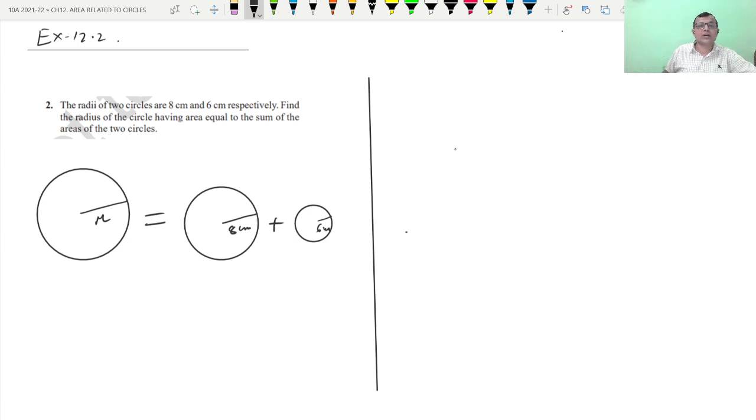According to the question, what is the area of this circle? Pi r square. What is the area of this? Pi times 8 square. What is the area of this? Pi times 6 square.